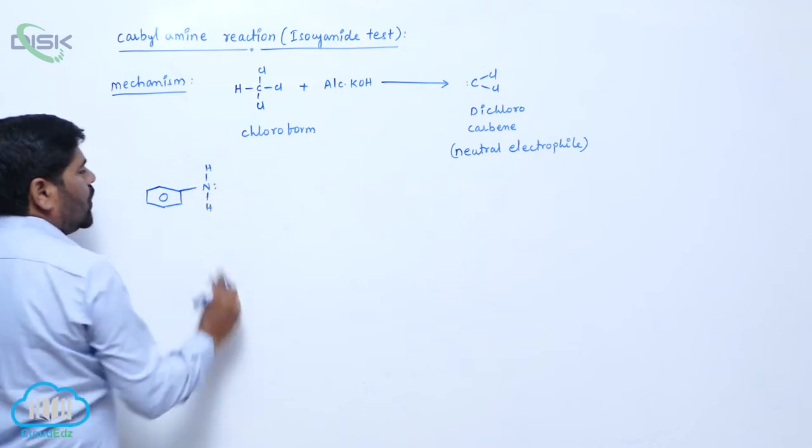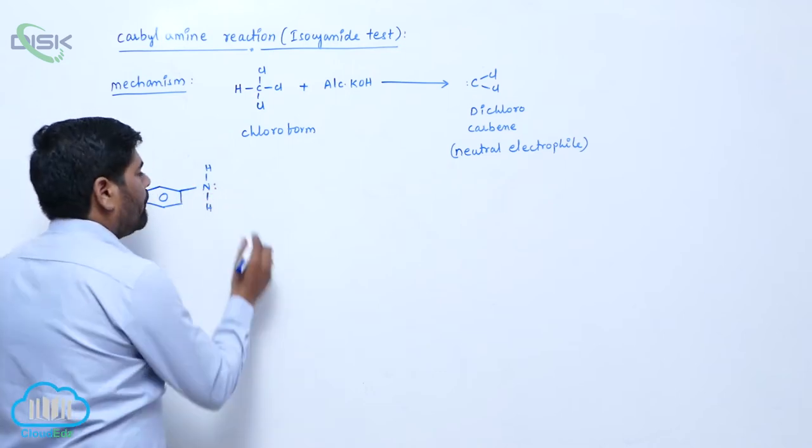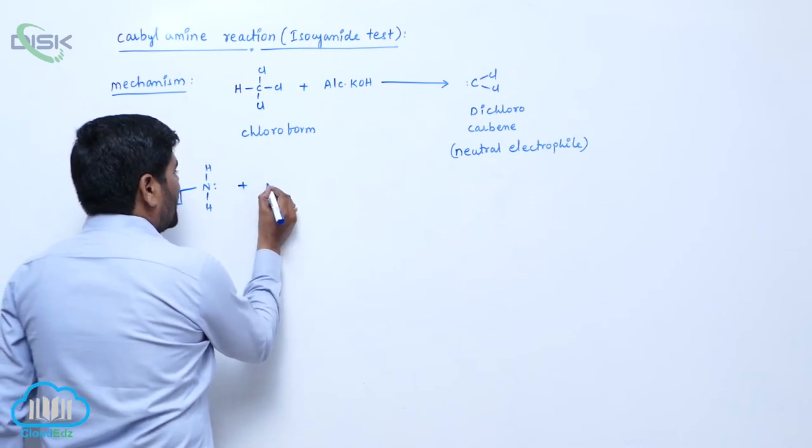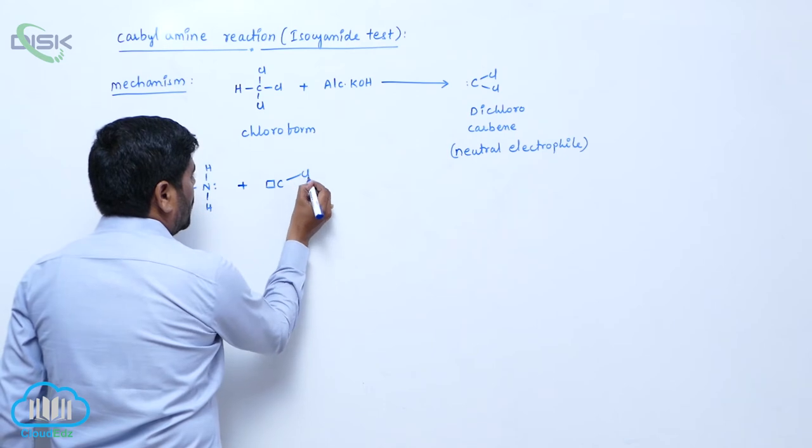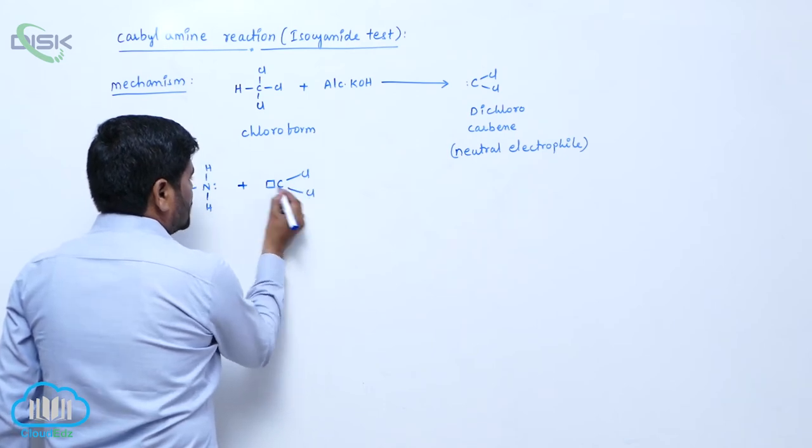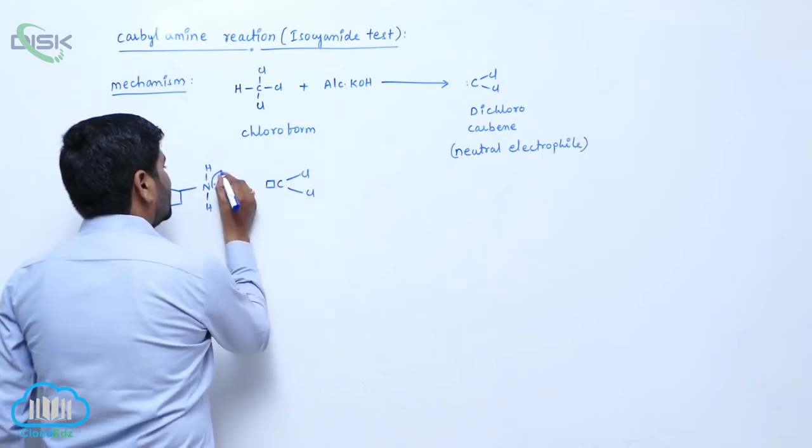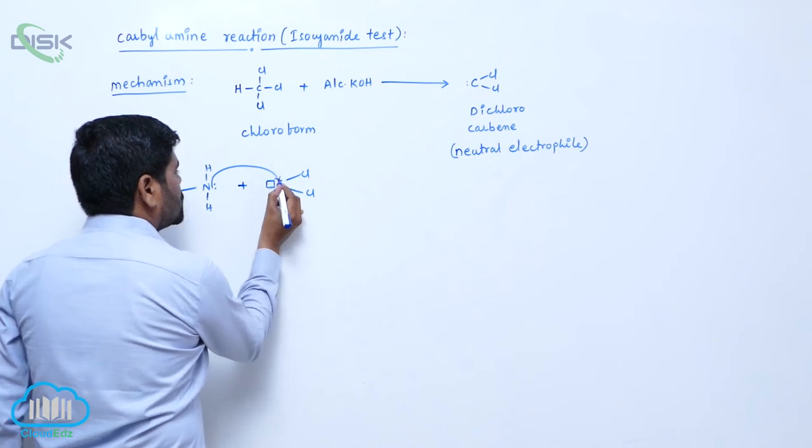Nitrogen contains a lone pair of electrons. Dichloro-carbene has a vacant orbital. This is the vacant orbital. This lone pair of electrons attaches here.